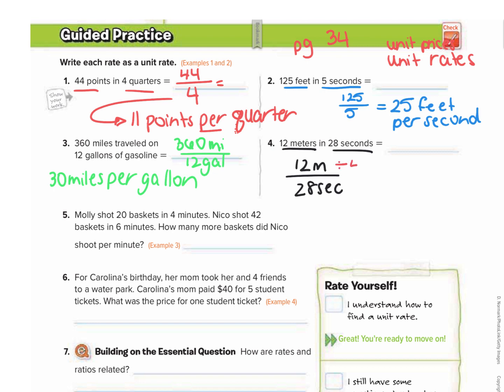So 12 and 28 can both be divided by four, and we would get three over seven. So we get three sevenths meters per second. So that would be our unit rate.